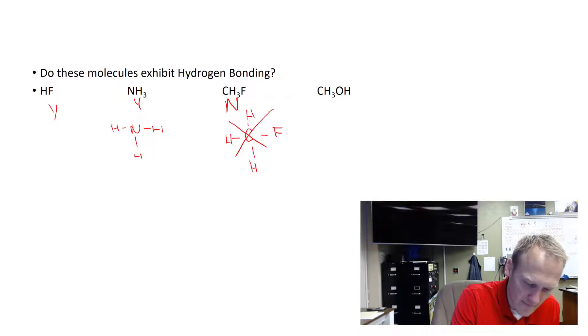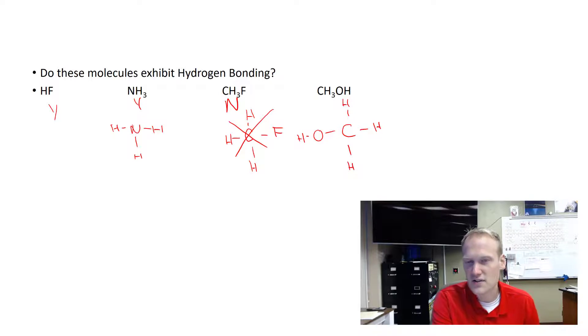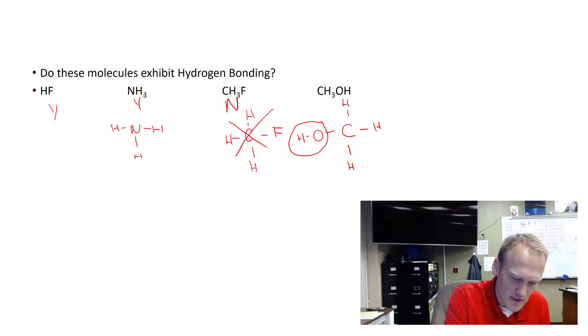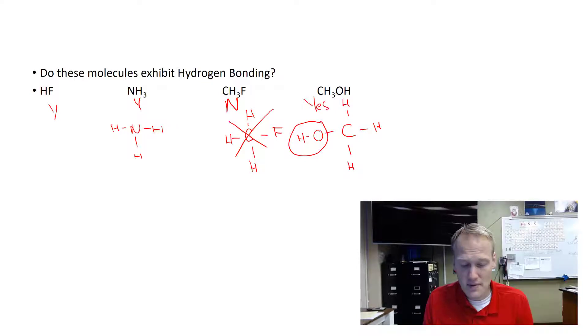And then if we look over here, we have carbon with three hydrogens around it, and then we have an OH. The question becomes, do we have a hydrogen bonded to an oxygen, nitrogen, or fluorine? And the answer is yes. So this would be a yes. So some of these molecules you might need to draw out to see if they're going to exhibit hydrogen bonding or not.